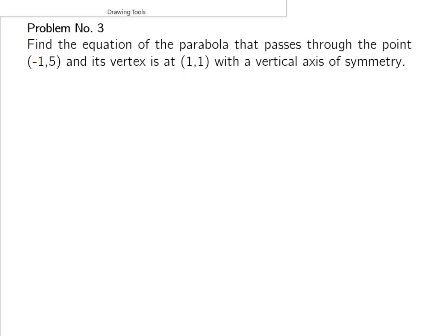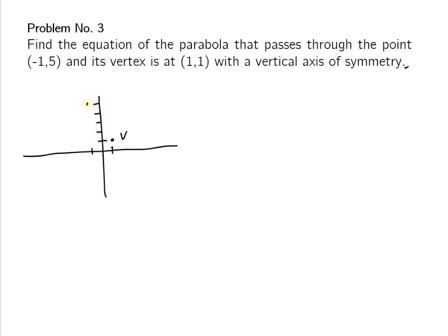Problem number 3: find the equation of the parabola that passes through the point (-1, 5), with vertex at (1, 1) and a vertical axis of symmetry. A vertical axis of symmetry means the parabola may open upward or downward. Plotting the vertex at (1, 1) and the point (-1, 5), we can see it opens upward. So the equation is in the form (x - h)² = 4p(y - k).